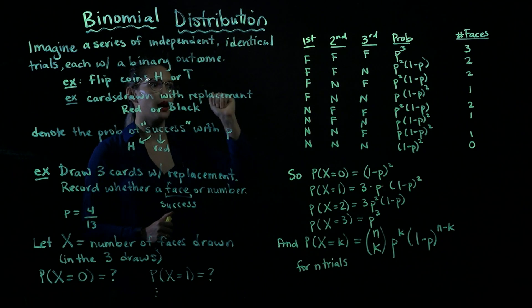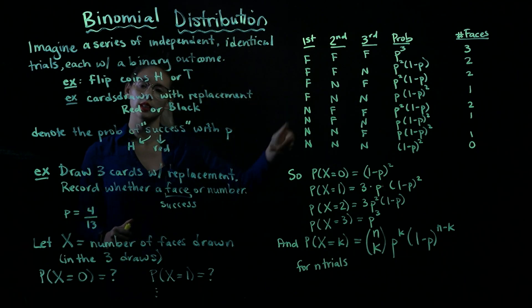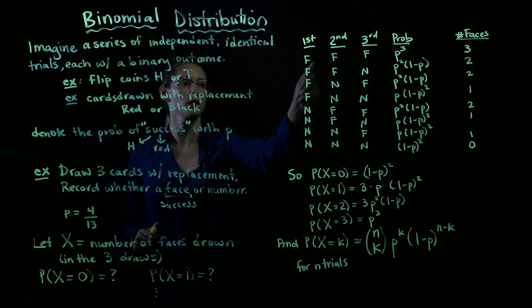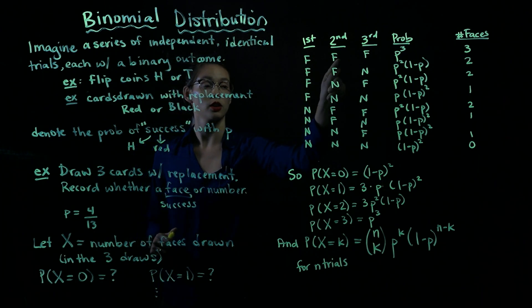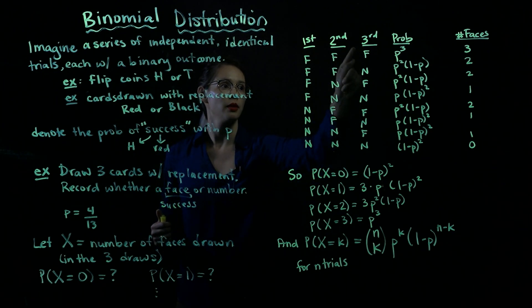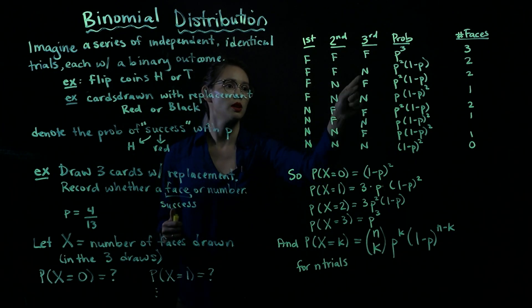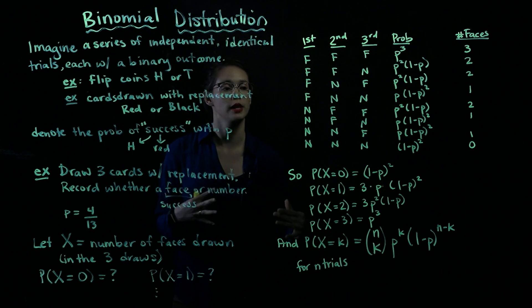So let's start off by thinking about, well, what are the different options? When I draw my first card, I could get a face or I could get a number. When I draw my second card, I could also get a face or a number, and the third face or number. So here I've just made all the different combinations of faces and numbers.